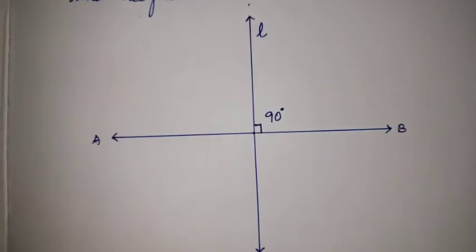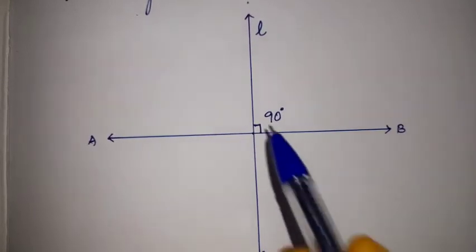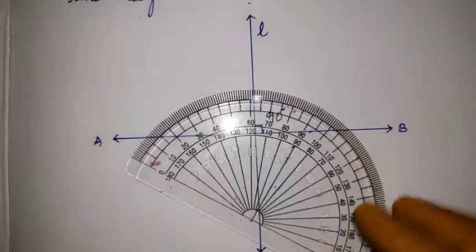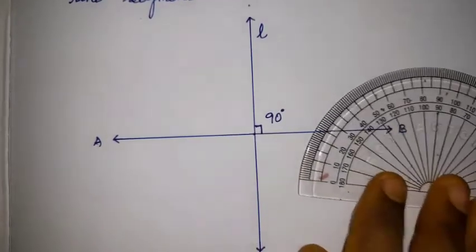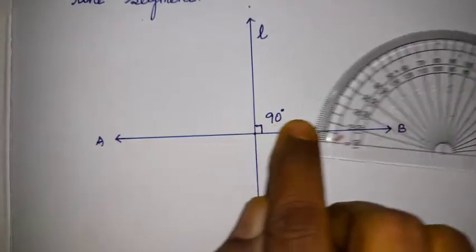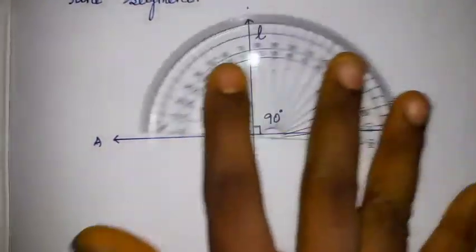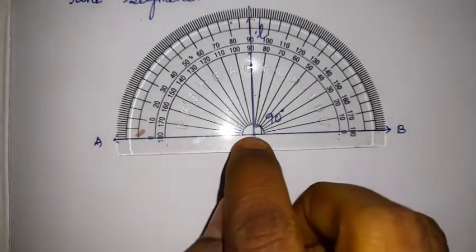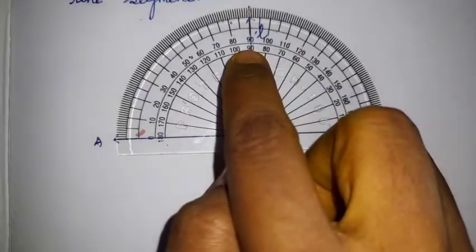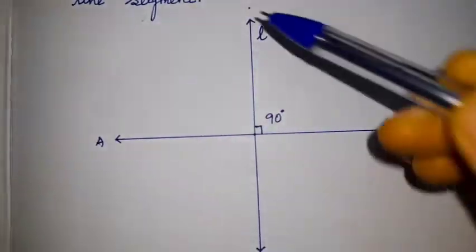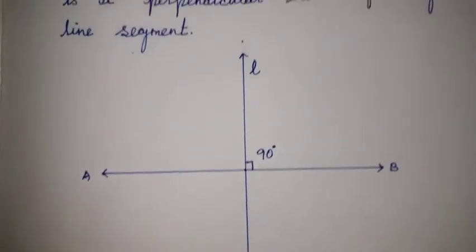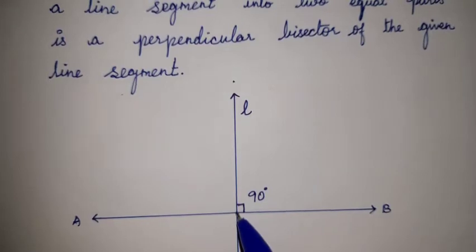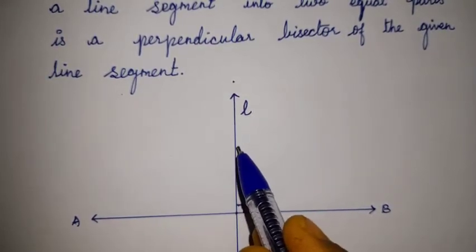This is how we construct the perpendicular bisector. The perpendicular line meets the AB line segment at a point, and at that meet point it forms a 90-degree angle. We place the protractor on the AB line segment at the midpoint. The perpendicular bisector meets AB at 90 degrees. The line through that point is the perpendicular bisector.